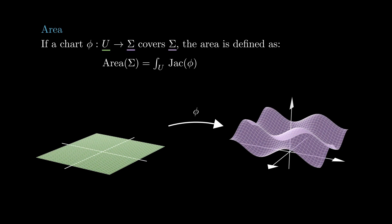I'll leave it as an exercise to you to check two things. First, that this Jacobian is precisely the length of the cross product of the partial derivatives of the parametrization, and that this notion of area is independent of the parametrization.